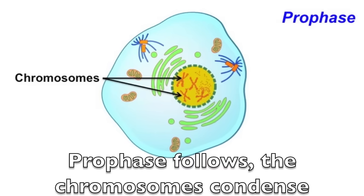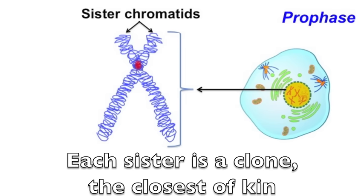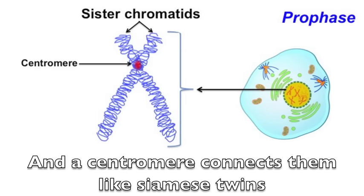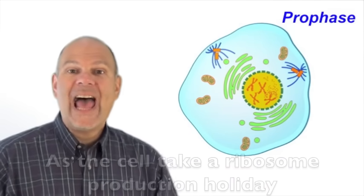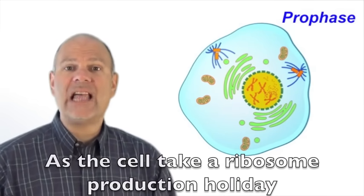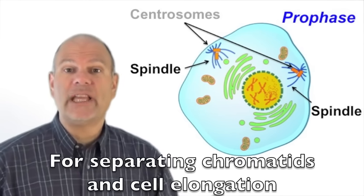Prophase follows, the chromosomes condense, each is made of two sister chromatids like an X. Each sister is a clone, the closest of kin, and a centromere connects them like Siamese twins. The nucleolus disappears, it melts away, as the cell takes a ribosome production holiday. The centrosomes separate, start spindle formation for separating chromatids and cell elongation.